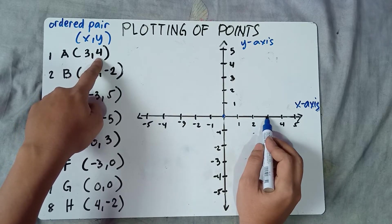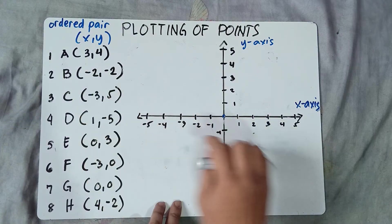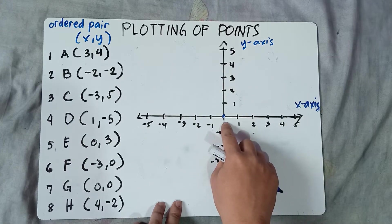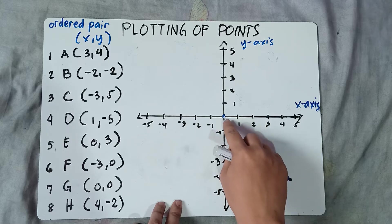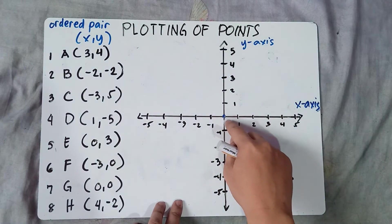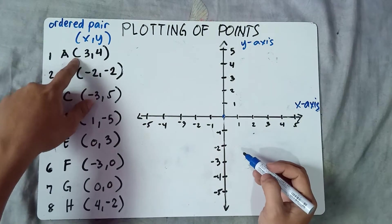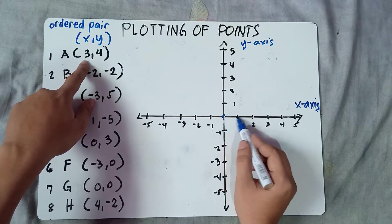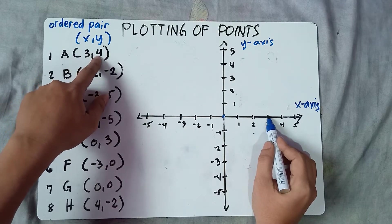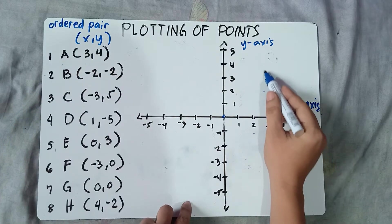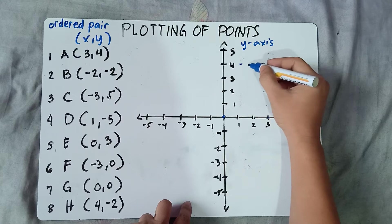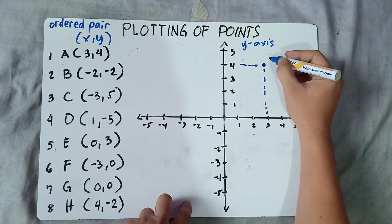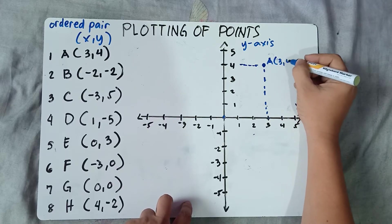Since y is positive 4, you move 4 units upward. Remember: if x is positive, move right; if x is negative, move left. If y is positive, move upward; if y is negative, move downward. For point A, x is positive 3 — move 3 units right. Y is positive 4 — move 4 units upward. You can put a broken line if you want. So A equals (3, 4).